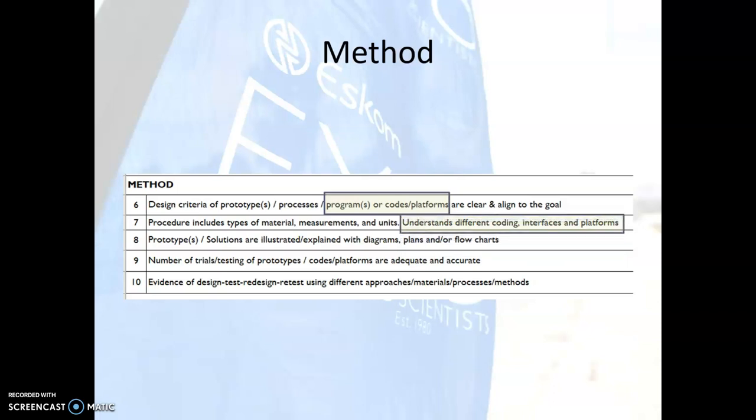Item number seven — 'procedure includes types of materials, measurements, and units' — is unlikely to be relevant in a computer science project. However, 'understands different coding interfaces and platforms' is specifically intended for computer science projects. For item number eight, we replace 'prototypes' with 'solutions'. Diagrams and plans are unlikely, but flowcharts may be used. What is required is some kind of description of the algorithm — it could be a flowchart, a verbal description, or pseudocode, depending on the subcategory.